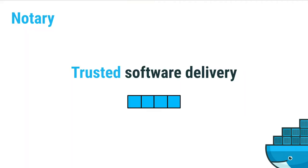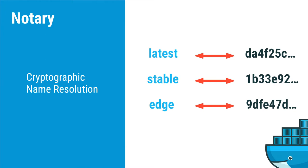Now that we have our images, we already know the tag points to a hash, but we can use Notary to cryptographically sign that hash to ensure that what you're pulling is exactly what you intended. Notary is an important piece in the supply chain. With Notary you get cryptographic name resolution — the tag points to a hash, and combined with the Merkle DAG being the sum of all layer hashes, we have a way to ensure exactly what you want is exactly what you get.